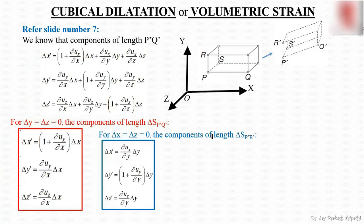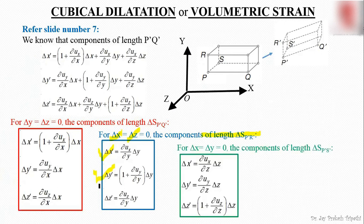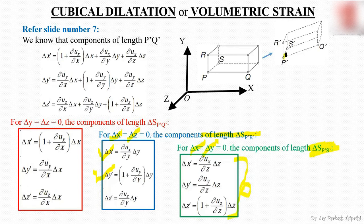Similarly, we can write the components of length P'R' by substituting δx = 0 and δz = 0, giving δx', δy', and δz' for that line. Likewise, by putting δx = 0 and δy = 0, we get the components of length P'S'. Here are the expressions of all three components of P'S'.